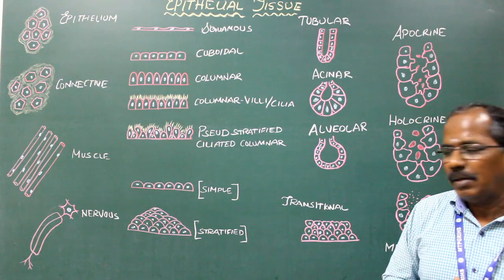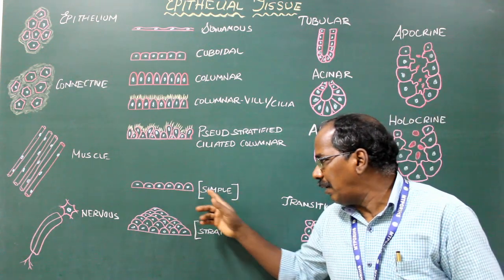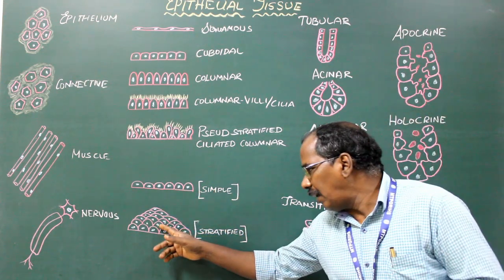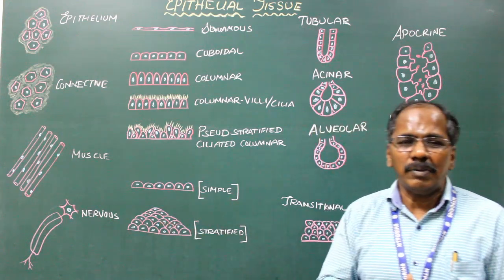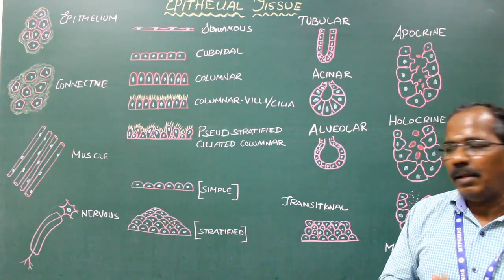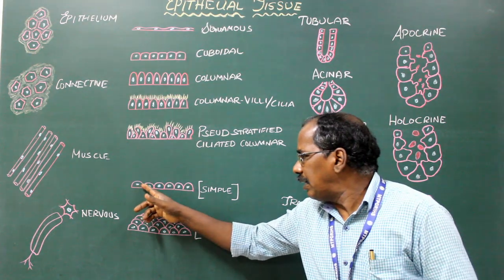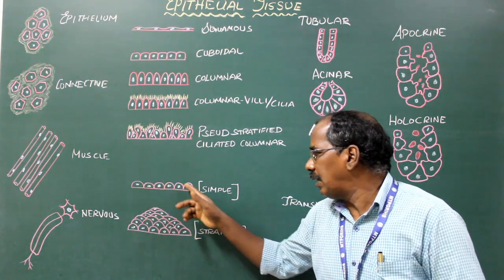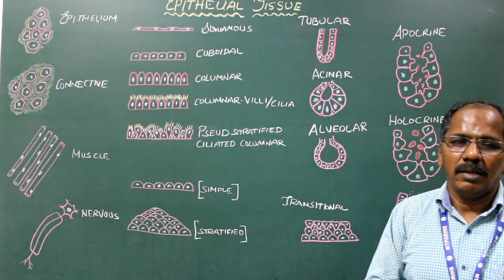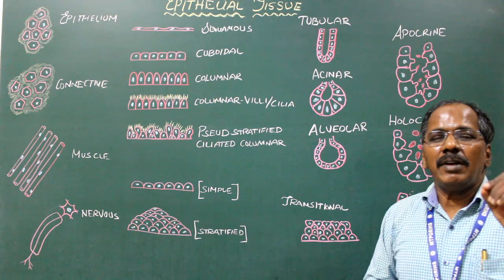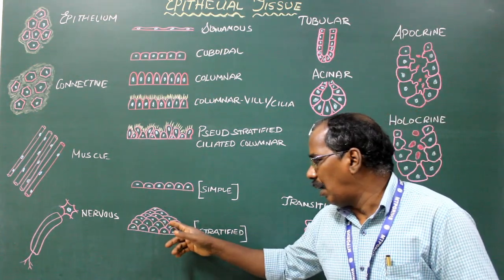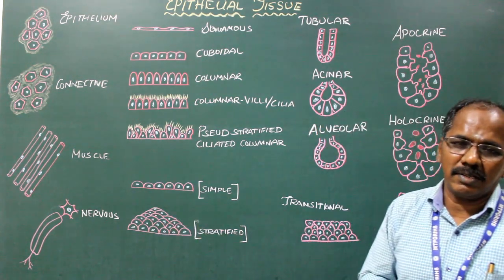There are two types: simple epithelium and stratified or compound epithelium. Simple epithelium consists of a single layer of cells arranged on a basement membrane. Stratified epithelium consists of two or more layers of cells.